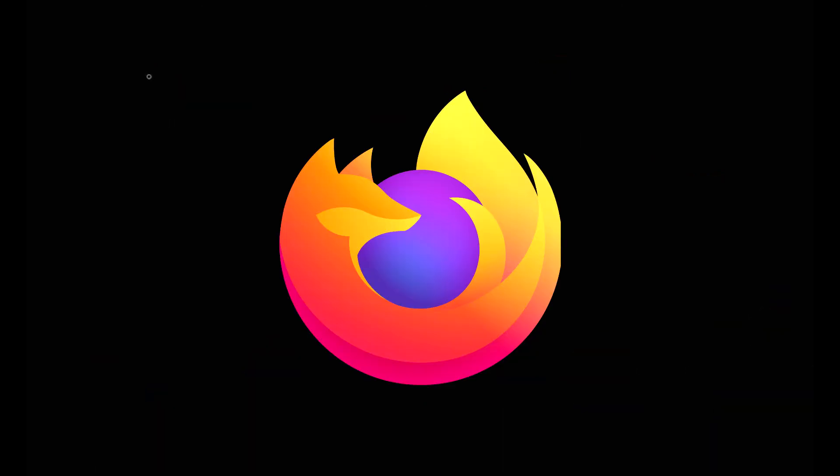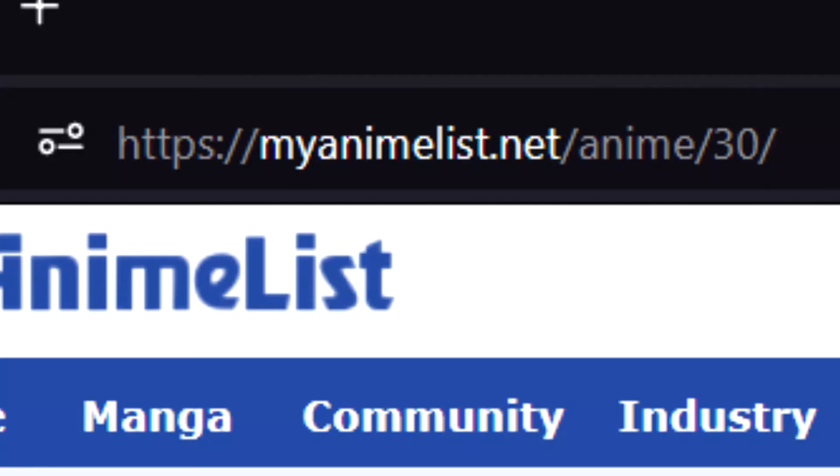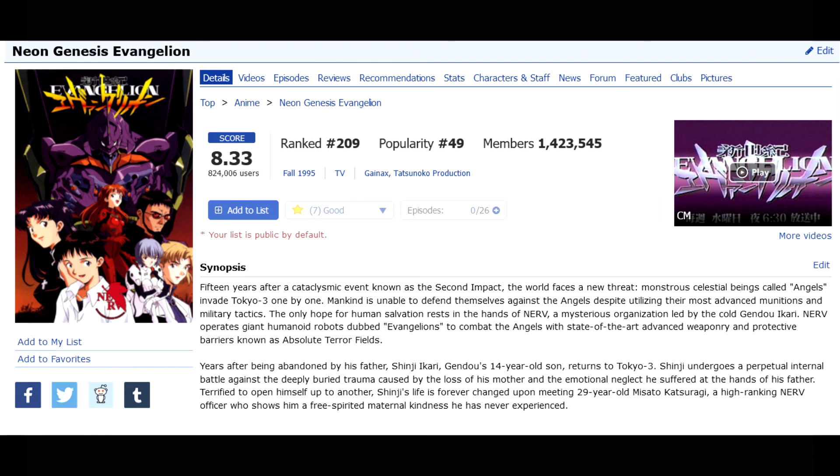Open up a browser. Go to my anime list. Go to the search bar. Punch in the number 30, so we can see which anime was indexed at the 30th place on my anime list. Search up. And we get Neon Genesis Evangelion. Making it the best anime to ever exist.